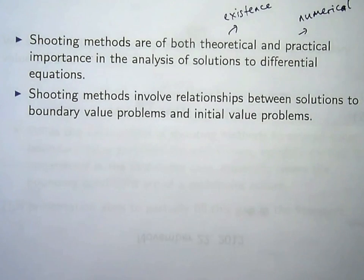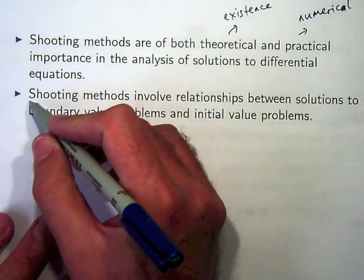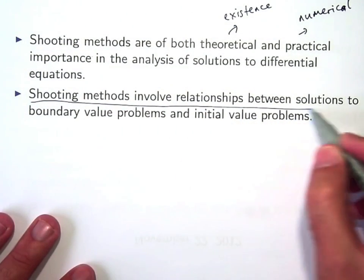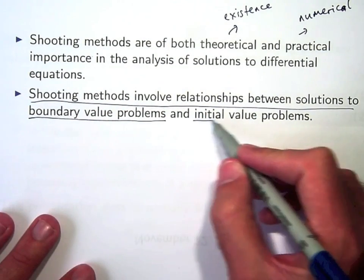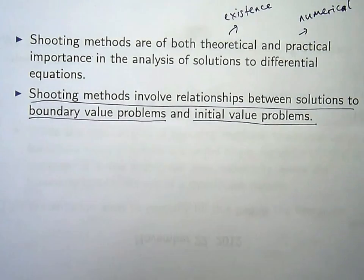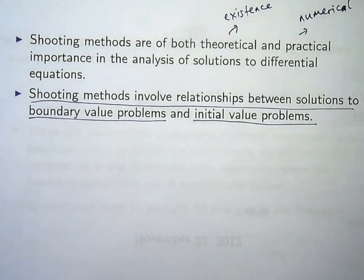But what are shooting methods? Shooting methods involve relationships between solutions to boundary value problems and initial value problems. So you have a boundary value problem, you form a related initial value problem, you look at solutions to both problems and try to relate them.